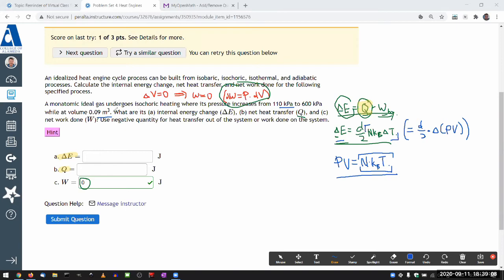So my volume doesn't change here, so I'm going to just leave the volume here. This expression here for the purpose of this question will look like, let's see here, monatomic, so my degree of freedom is three. So three half times the volume that's constant times change in pressure. And I don't even need the Boltzmann constant.